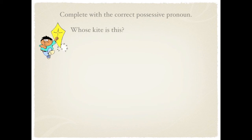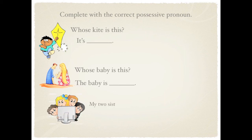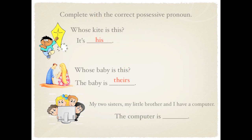Let's take a look at the examples. Whose kite is this? The kite is his — the boy. Whose baby is this? The baby is theirs — the couple, the man and the woman. The computer is ours — all the boys and girls.